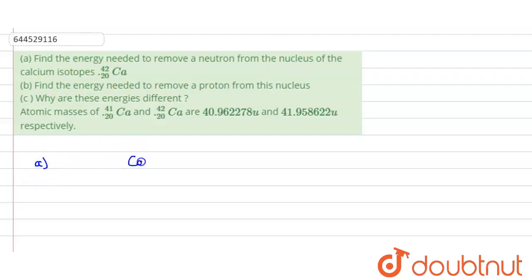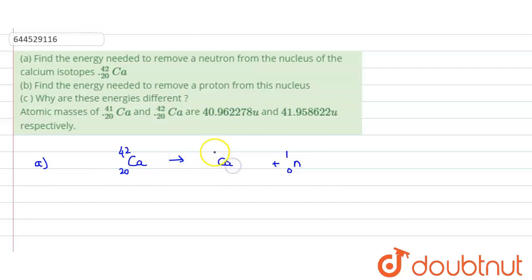For part A, we are starting with calcium-42. We are removing one neutron, so the neutron will have no charge and mass number 1. Balancing the equation, the remaining nucleus will have mass number 41 and atomic number 20, which is calcium-41.